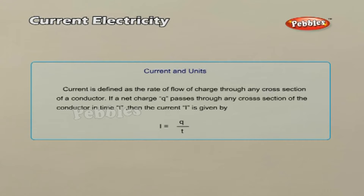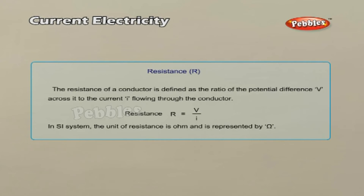Resistance R: The resistance of a conductor is defined as the ratio of the potential difference V across it to the current I flowing through the conductor. Resistance R is given by V by I. In the SI system, the unit of resistance is Ohm, represented by the symbol Ω.